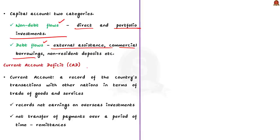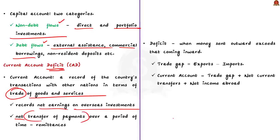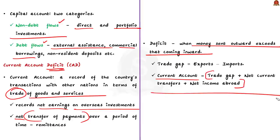A nation's current account maintains a record of a country's transactions with other nations in terms of goods and services. It also records net earnings on overseas investments and net transfer of payments over a period of time, such as remittances. This account goes into deficit when money sent outward is more than the money coming inward. So current account deficit is the difference between the money coming in because of our exports and the money flowing out because of the things and services we import into India.